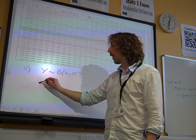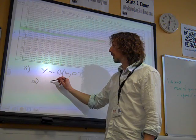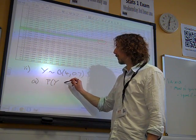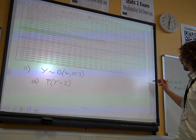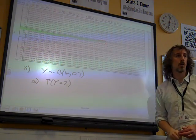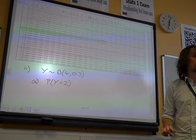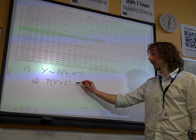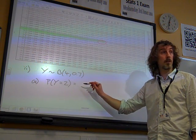So when it says, for part a, probability that y, is it y equals 2 that we're after? Yep. When it says that, we have to work out this probability ourself. It's not that difficult a thing to do. This is in the formula booklet.